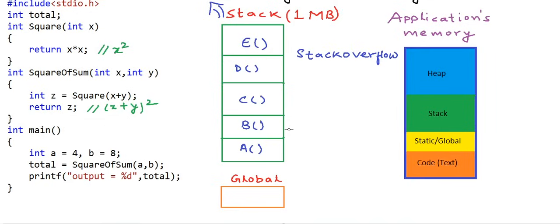Another limitation is that if we need to declare a large data type like an array as a local variable, then we need to know the size of the array at compile time only. If we have a scenario where we want to decide how large the array will be based on some parameter during runtime, then it is a problem with stack. For all these requirements — like allocating large chunks of memory or keeping a variable in the memory till the time we want — we have heap.